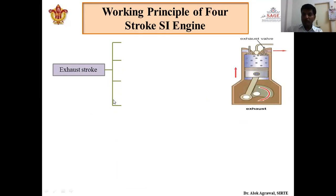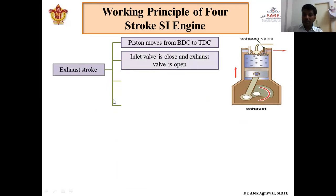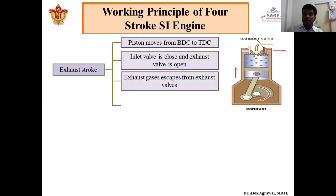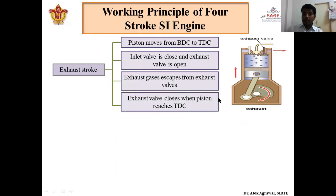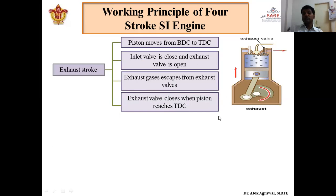After the expansion stroke the piston is ready to move from bottom dead center to top dead center to complete the fourth stroke — the exhaust stroke. The inlet valve is closed and the outlet valve is open. The piston moves from bottom dead center to top dead center and the exhaust gases leave the combustion chamber through the exhaust valve and exhaust manifold. This stroke is completed when the piston reaches top dead center, both valves close, and one complete cycle of operation has been completed. The piston is then ready to perform the next cycle following the same sequence.